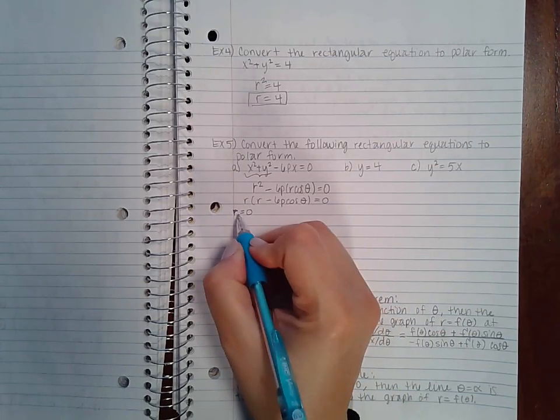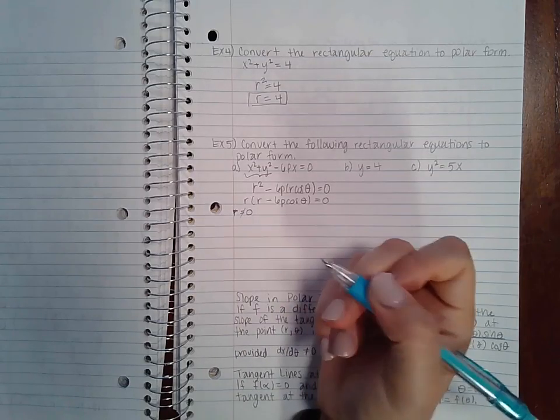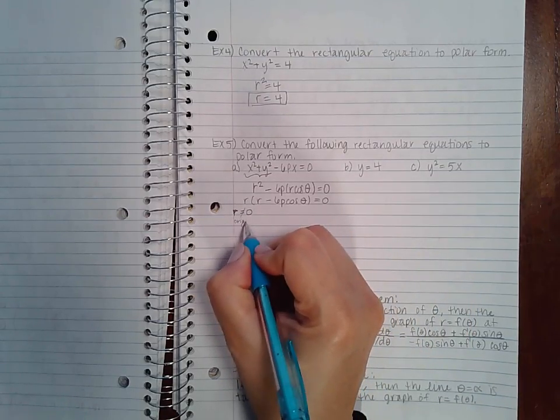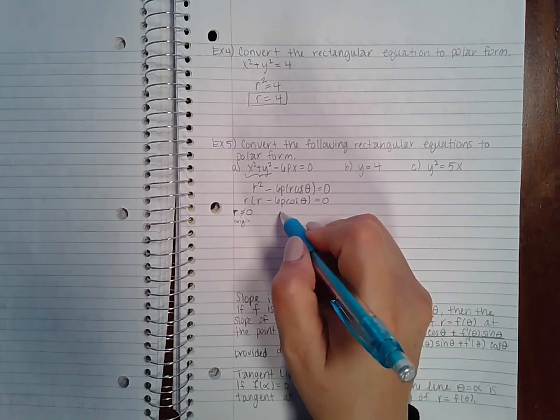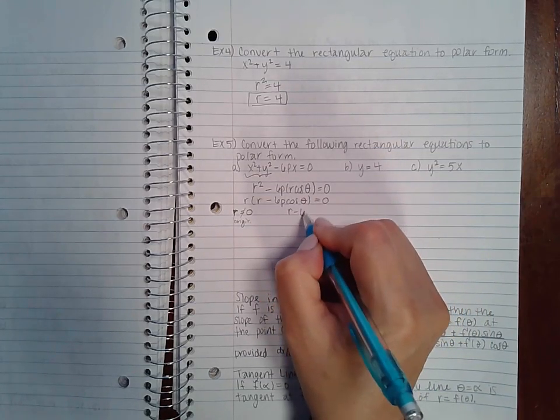But your radius cannot equal zero because then you don't have a graph, all you have is the pole—the origin if r equals zero. But if you take this equation and you solve for r...